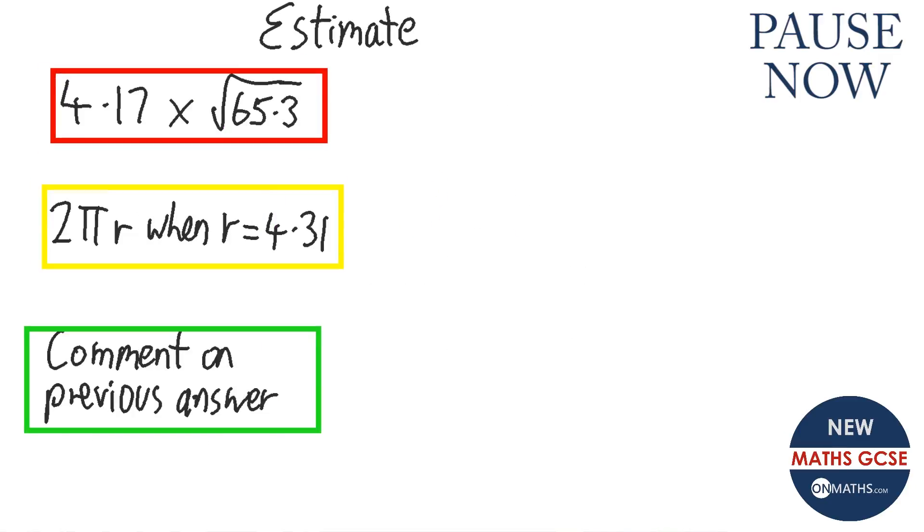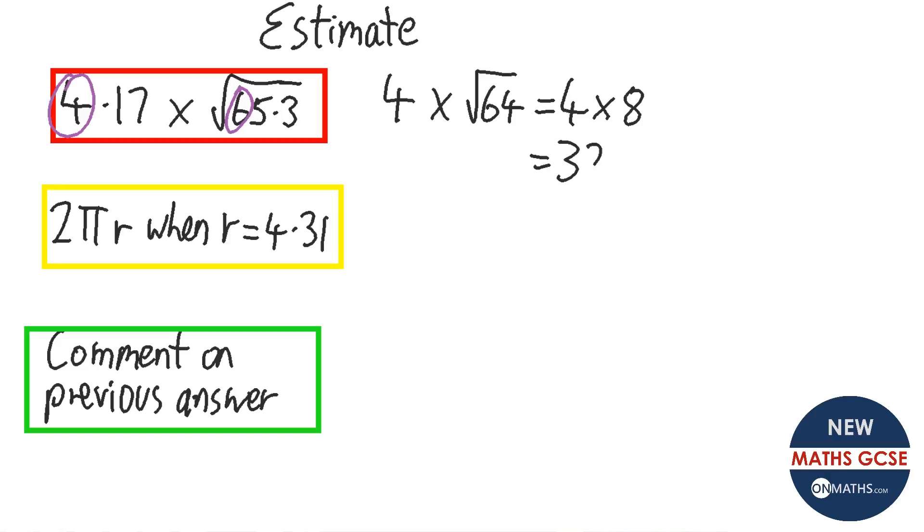Okay, have a go. Okay, so for this first question, we've got a 4 and we've got a 6. So 4.17 rounds to 4, and this time the nearest square number is 64. So that's 4 times, 8 times 8 is 64, so 4 times 8. And 4 times 8 is 32.